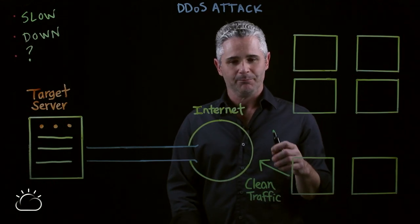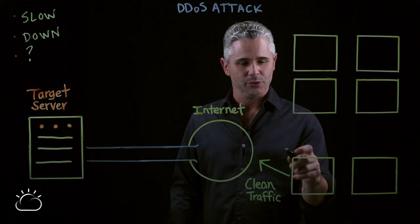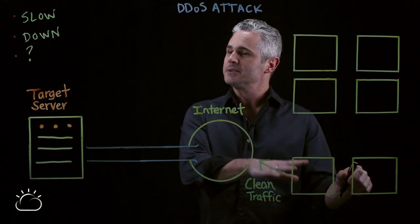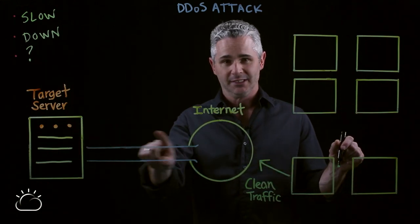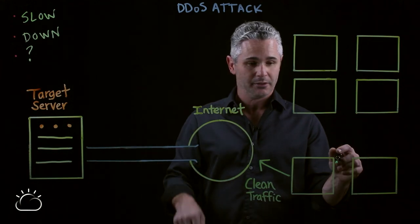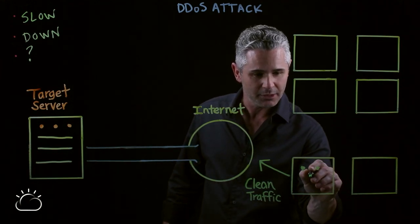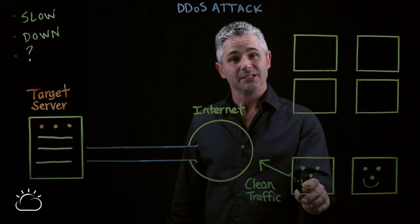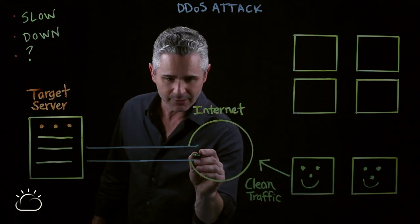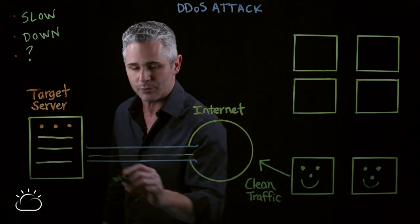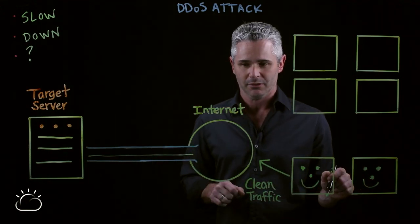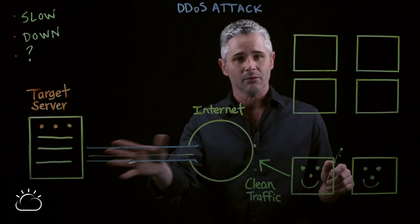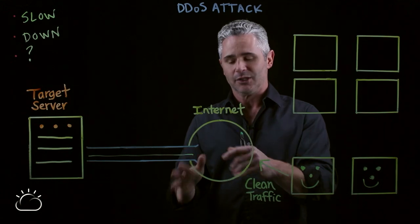To demonstrate this a bit more, I'll show you how normal traffic flows from users on the internet to the target server using its internet connection. We'll have normal internet users here, and clean traffic comes through the internet and traverses through the connection from the internet to the target server. This traffic flows just perfectly fine with no slowdown and no constriction on that traffic flow.